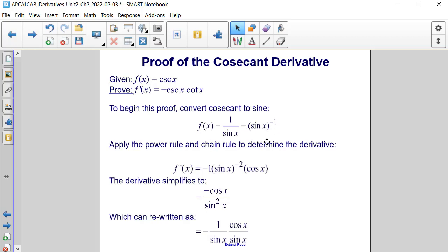Next, apply the power rule and chain rule to determine the derivative. Bring the negative 1 down in front, leave sine of x in the parentheses, and make it to the negative second power because we decreased negative 1 by 1 to give us negative 2. Then take the derivative of the inside, which is the derivative of sine, which is cosine.